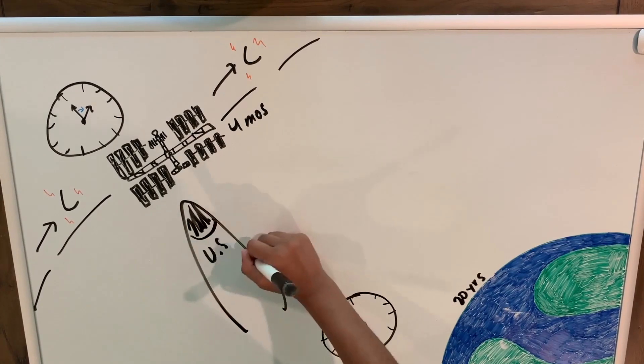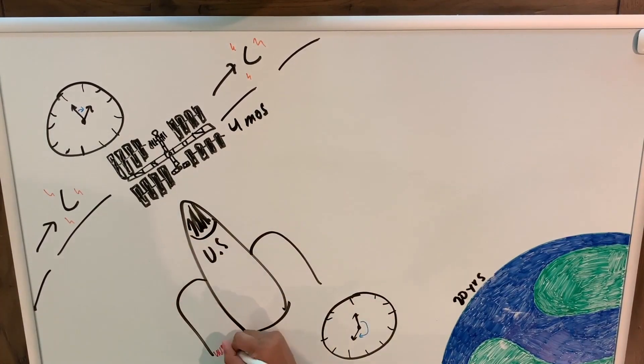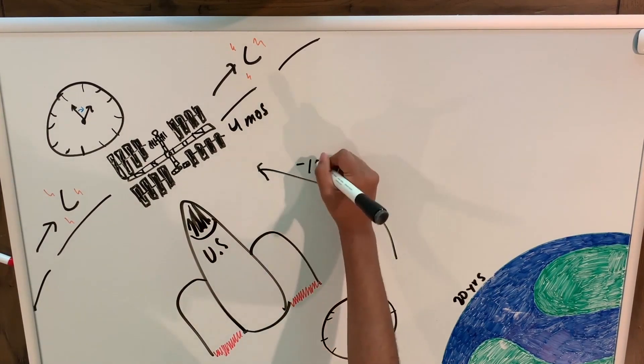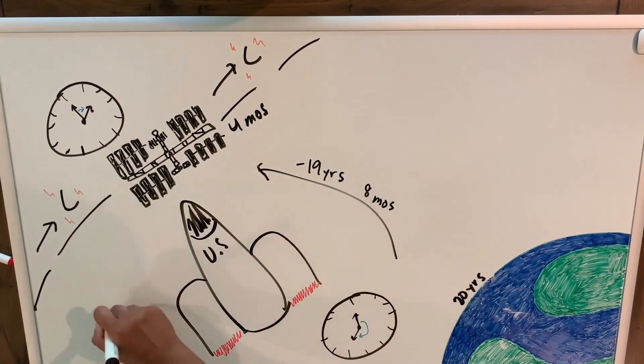If you were to fly up to space from Earth and join the crew in the satellite, relative to your previous location on Earth, you've just traveled back in time about 19 years and 8 months. That's pretty cool.